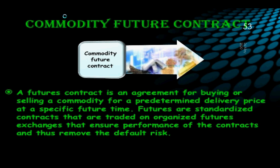The first important commodity derivative is the commodity future contract. A future contract is an agreement for buying or selling a commodity for a predetermined delivery price at a specific future time. Futures are standardized contracts that are traded on an organized futures exchange that ensures performance of the contracts, thus removing the default risk.